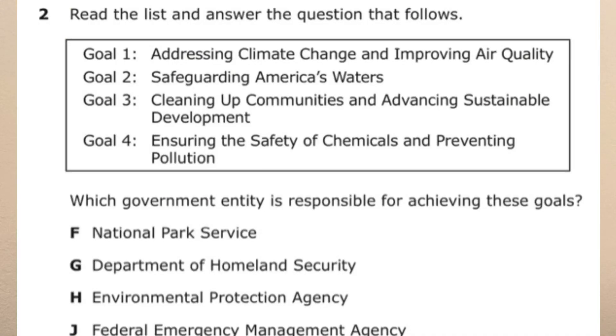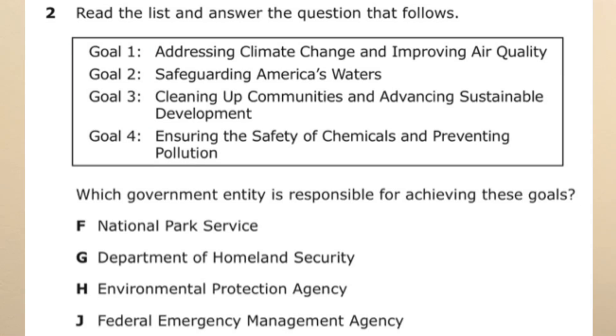The Environmental Protection Agency, or the EPA, created by Richard Nixon, has a primary goal of reducing pollution and protecting the environment. It was founded in 1970. The question asks: which national government entity is responsible for achieving goals such as addressing climate change, improving air quality, safeguarding America's waters, cleaning up communities, and preventing pollution? The correct answer is H — the Environmental Protection Agency.